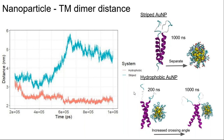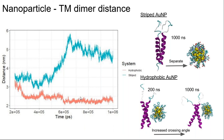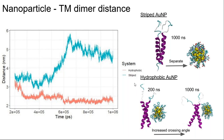We performed distance measurements, calculating the distance between the center of geometry of the nanoparticle and protein when placed next to each other for both the hydrophobic and striped nanoparticle. In the case of the striped gold nanoparticle, we can see it moved away from the transmembrane protein to around 5.8 nanometers and then settled at an average distance of 5 nanometers. However, the hydrophobic nanoparticle remains within the interaction distance of the transmembrane protein, and we can actually see an increase in the crossing angle for the hydrophobic nanoparticle.